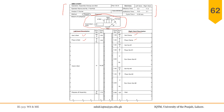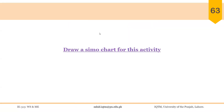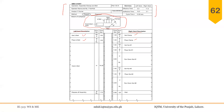The difference from the two-handed chart is that instead of using the five standard symbols, here we use symbols for therbligs. For example, 'get u-bolt' is the operation and involves two therbligs: reach and grasp. 'Place u-bolt' involves three therbligs: move, position, and release load. The time taken to perform each activity is drawn to timescale.